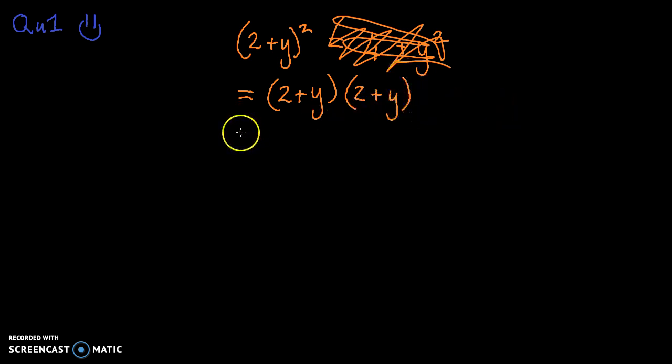And then, of course, you know you're squaring a binomial, so it's going to be 4 plus 2y plus 2y plus y squared. Which gives us 4 plus 4y plus y squared.